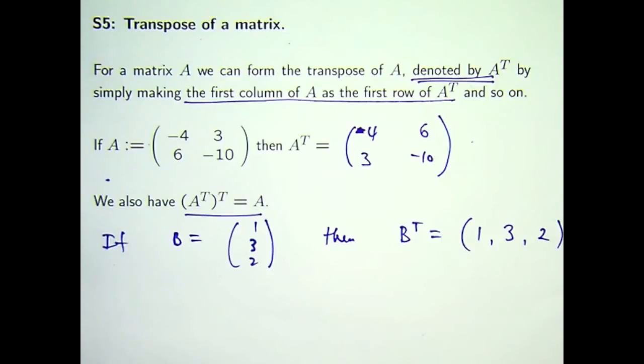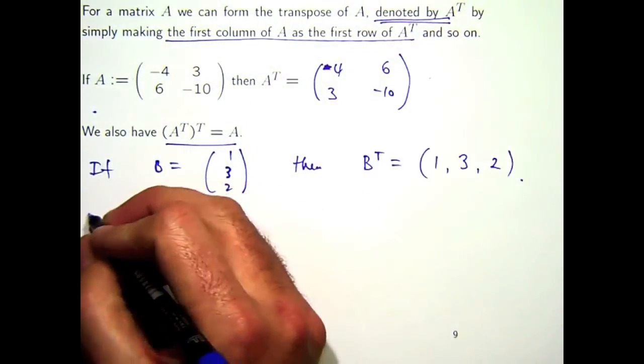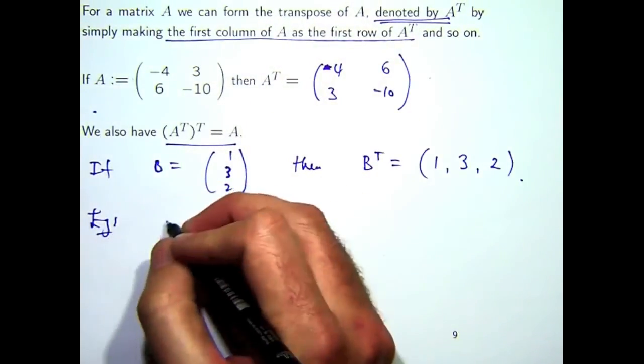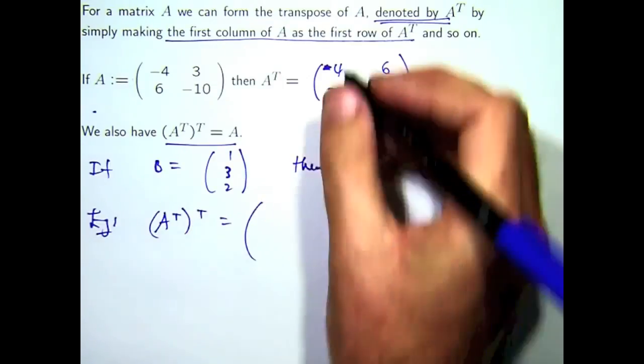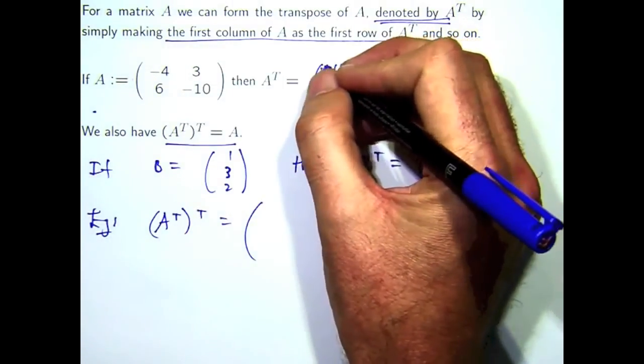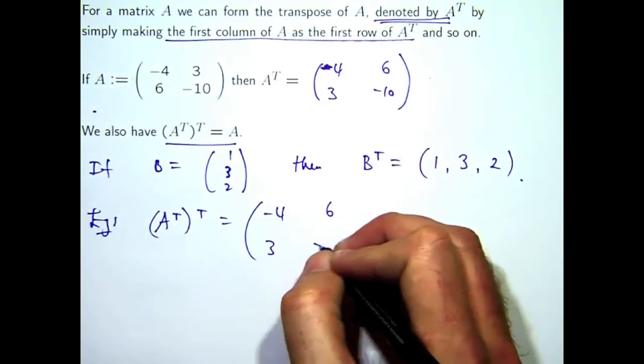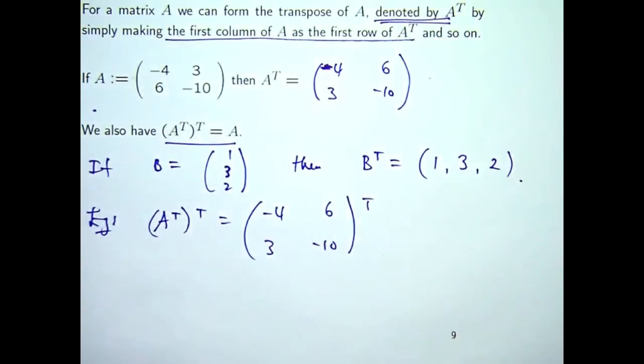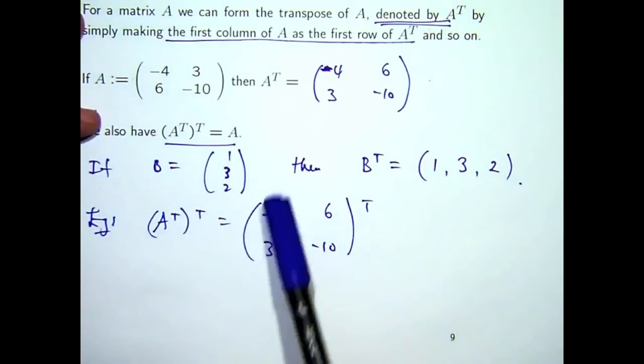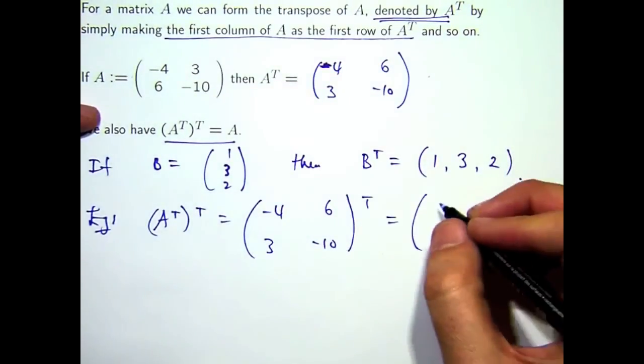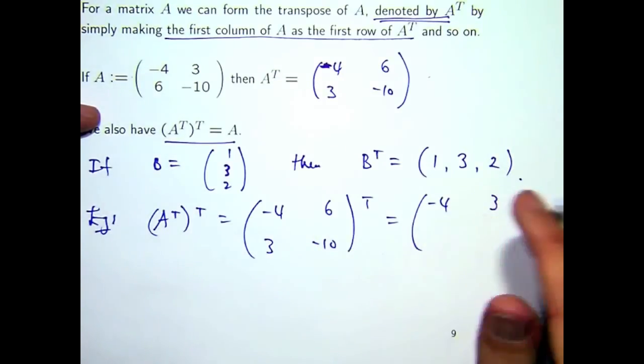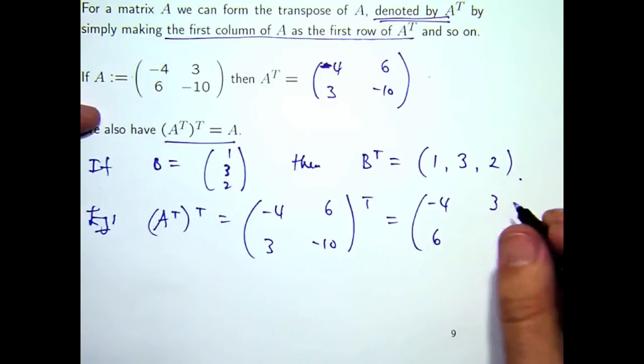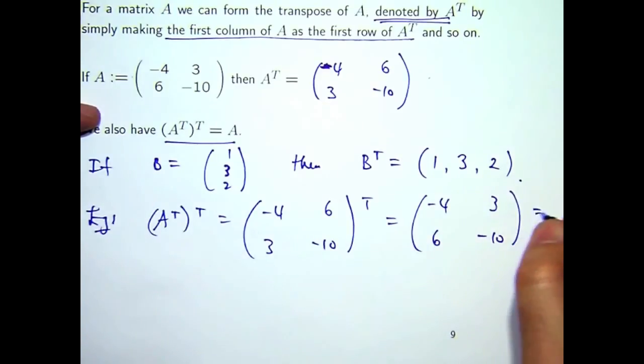So, let's have a look. If I calculate the transpose of this matrix, what do I get? Well, this is minus 4. So I'm transposing all of this. Let's take this, write it as the first row. Take this, write it as the second row.